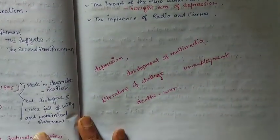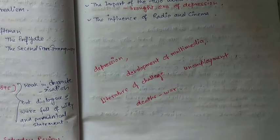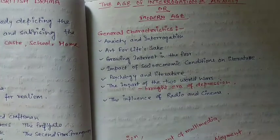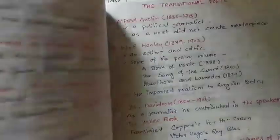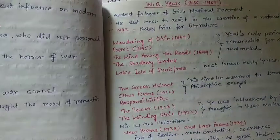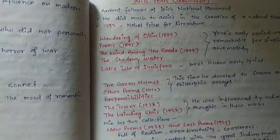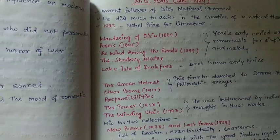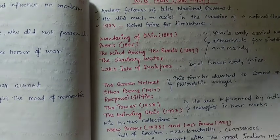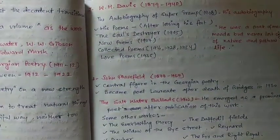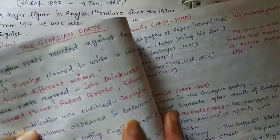If you want to understand the modern age well, you need to know the general characteristics of the age and the transitional poets and poetry — poetry in the modern age. I put a lot of effort into preparing these notes because this is a complete package for TGT and PGT level, and it will help you for UGC NET as well. You can see W.B. Yeats and groups of writers like the Georgian poets.